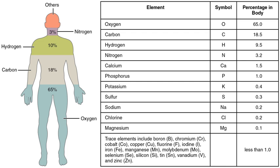Almost 99% of the mass of the human body is made up of six elements: oxygen, carbon, hydrogen, nitrogen, calcium, and phosphorus.